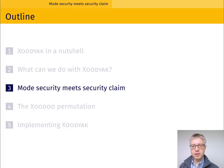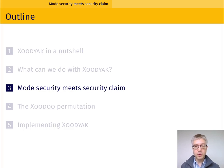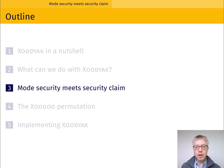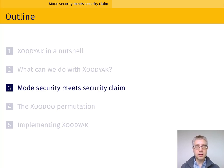I'm going to talk about the security claims we made on Zodiac. Overall, we wish to have 128 bits of security. The underlying permutation, Zoodoo with 12 rounds, we assume is strong enough so that Zodiac can reach the generic security level — that is, the generic security of the cyclist mode. So let me now discuss the generic security of cyclist.